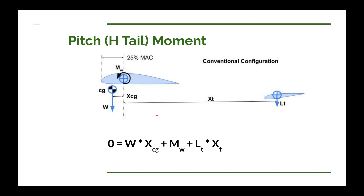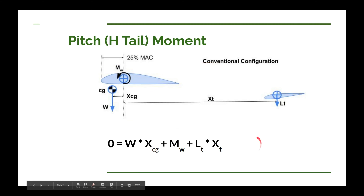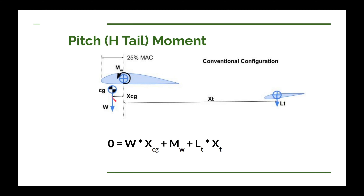If our airplane is flying in a condition where it's not accelerating, decelerating, or rotating, then all of the pitching moments on the airplane when you add them together will be zero, which is what this equation represents. One pitching moment is the center of gravity in relation to some reference point — in this case, the 25% of the mean aerodynamic chord. We use that because our wing pitching moment is centered there. The CG is going to be pulling down, so that's one pitching moment. We also have the wing pitching moment, and generally that's pitching down, which is negative.